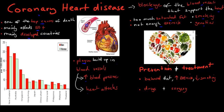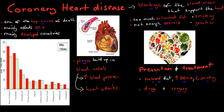You can see why it's called a lifestyle disease — because many of those factors, apart from genetics, you have control over: you can eat less saturated fat, do more exercise, or smoke less. In terms of prevention, having a balanced diet, doing more exercise, and smoking less are the main approaches. Treatment options include drugs that reduce the likelihood of a blockage, or surgery where you remove the blocked blood vessel and replace it with one from the leg that is unblocked.